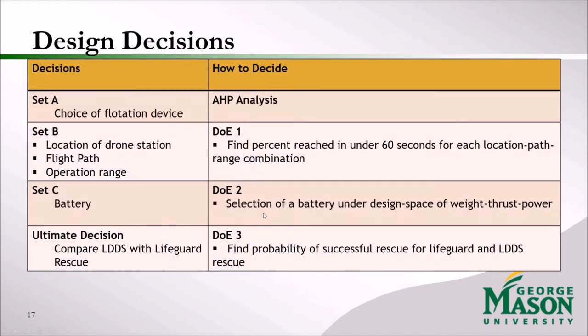There are three design decisions: Set A — the flotation device; Set B — the location of the drone and the flight path it takes; and Set C — the battery. For each set, we perform either an AHP analysis or a DOE.